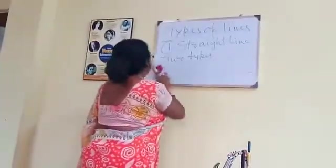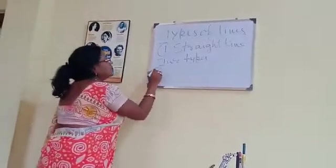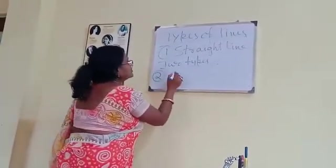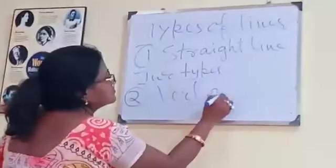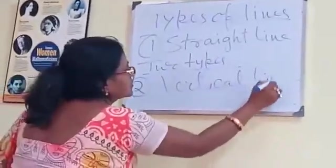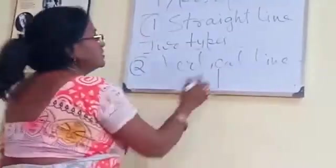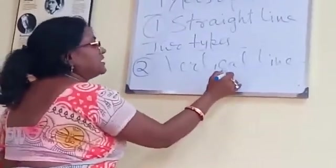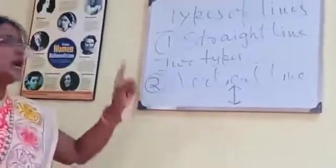Next type of line is vertical line. Vertical line you draw in this way. A vertical line goes straight up and down.